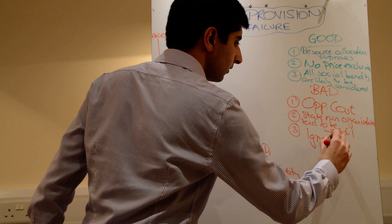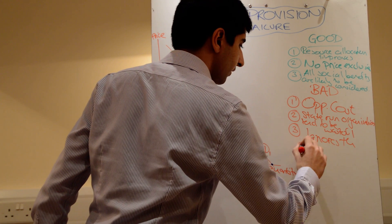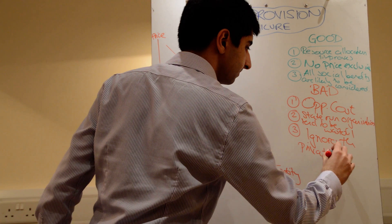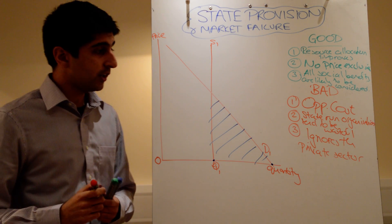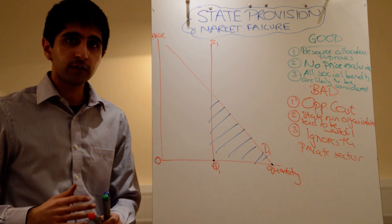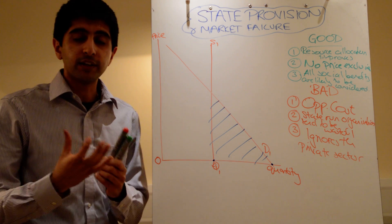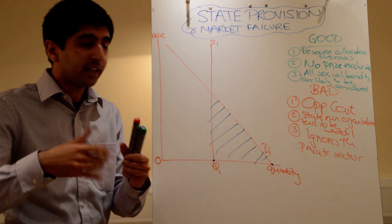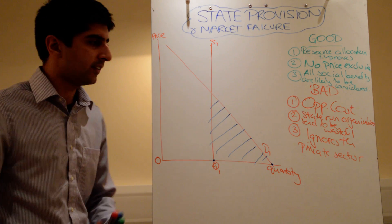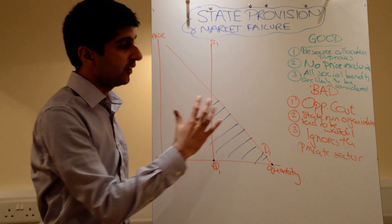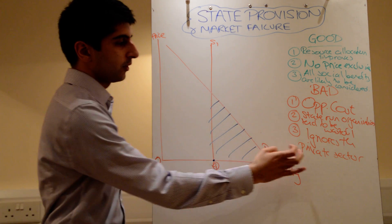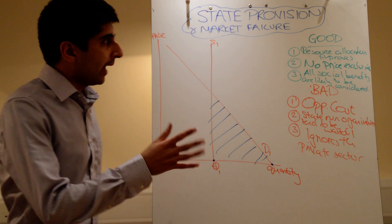Another bad thing is that it ignores the private sector completely, just state provision. The private sector could actually be very useful in bringing down costs, in providing great quality, maybe making technological improvements and things, innovating. The private sector can actually be very useful and by state provision, direct provision, ignores the private sector completely.